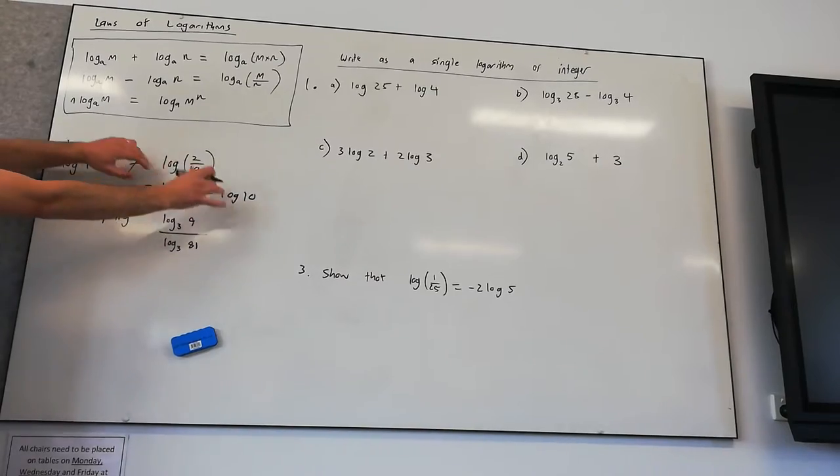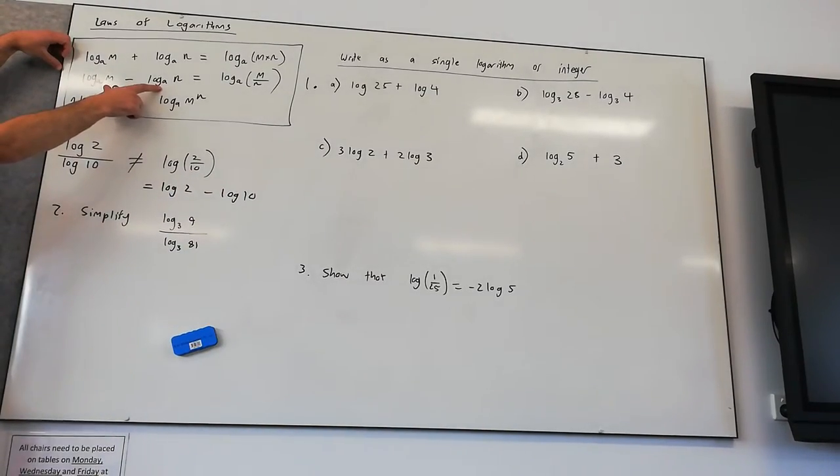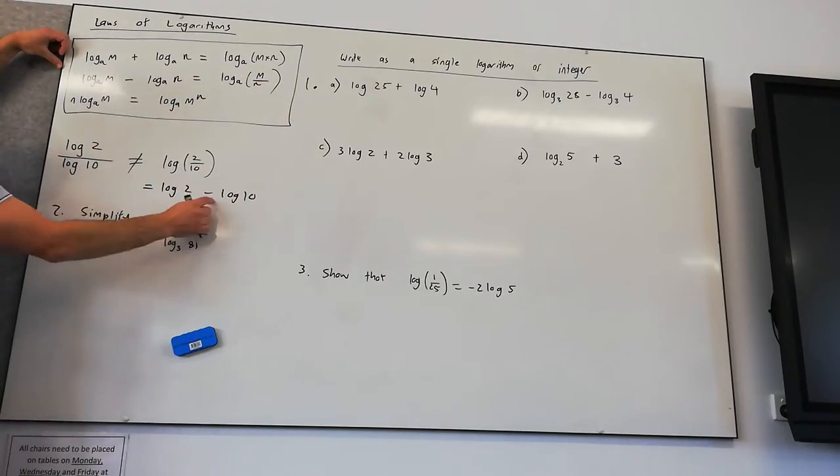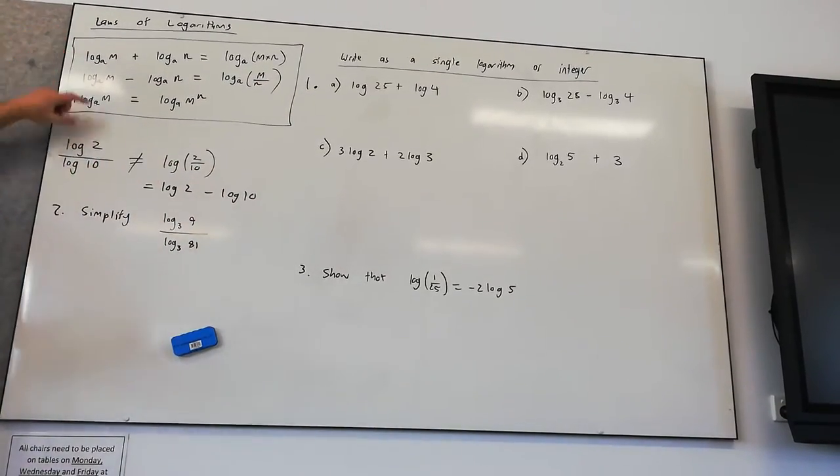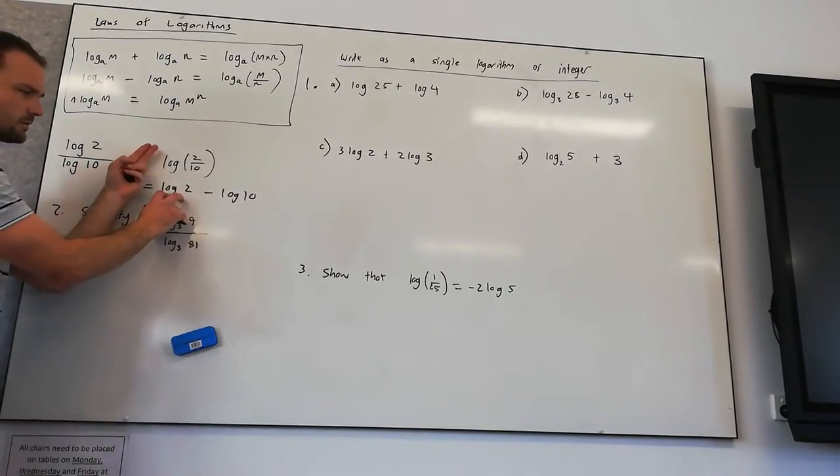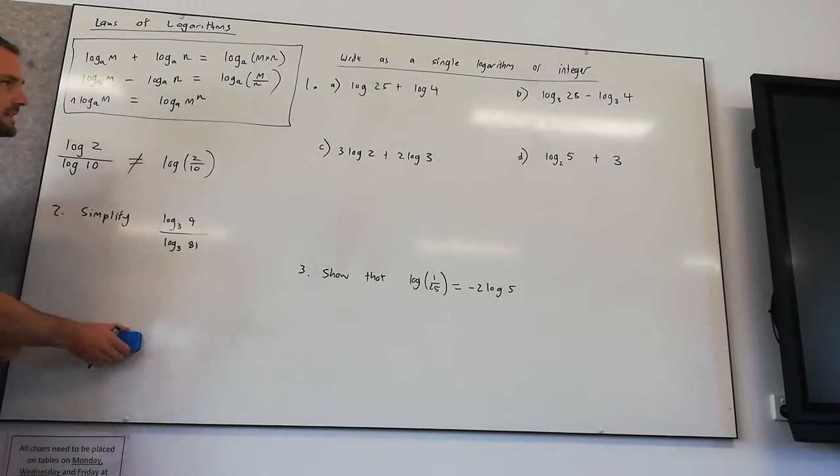What we've seen from our rules is log 2 on 10 is equal to log 2 take log 10. This here is an application of this rule. Log A, log M take log N equals log M on N. Log 2 take log 10 equals log of 2 on 10. So don't get that confused. This actually equals what we have here. So let's get straight into it.